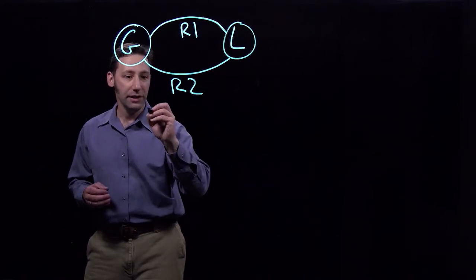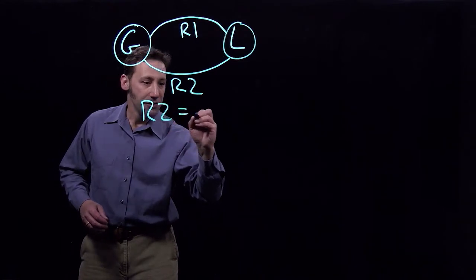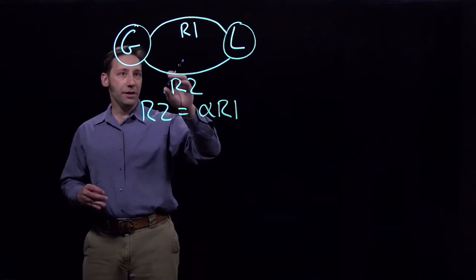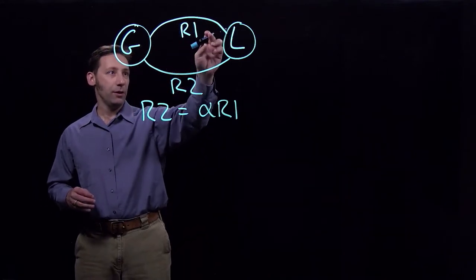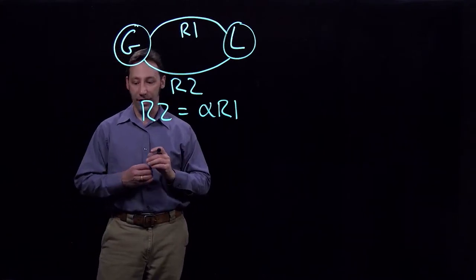So to make our lives a little easier what we're going to do is we're going to write R2 is equal to alpha times R1. So the proportion of the power flow that goes on line one or line two, those are described by the distribution factors.